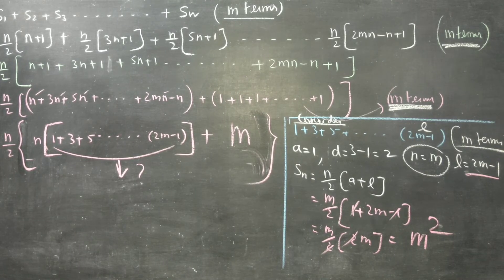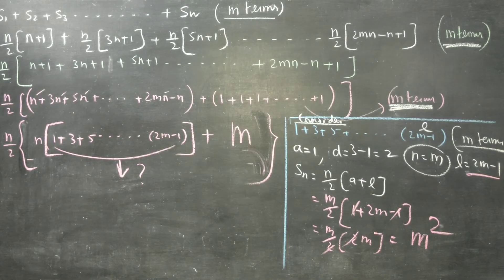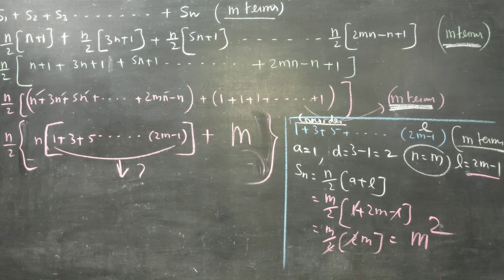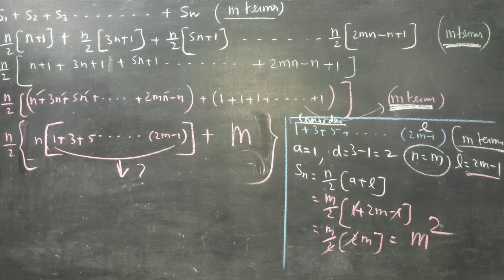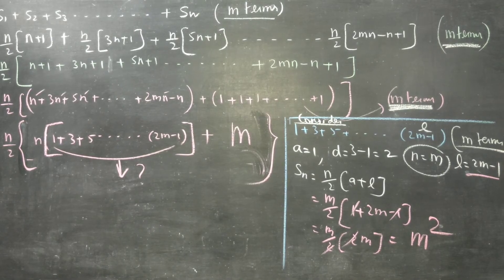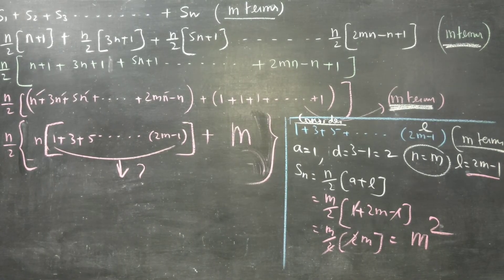So the sum 1 plus 3 plus 5 dot dot dot 2M minus 1 equals M squared directly. M terms are there, N is equal to M, last term is 2M minus 1. Use this result now.